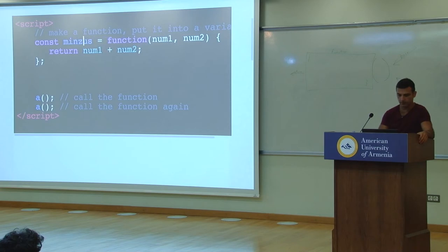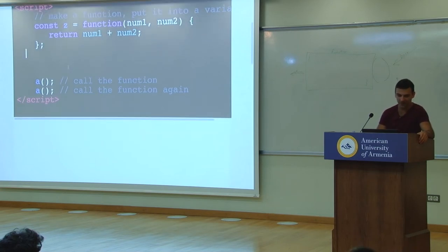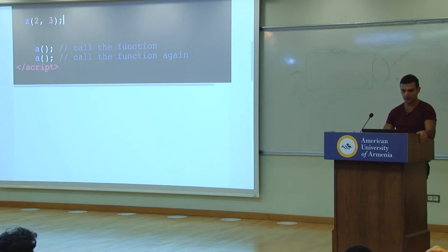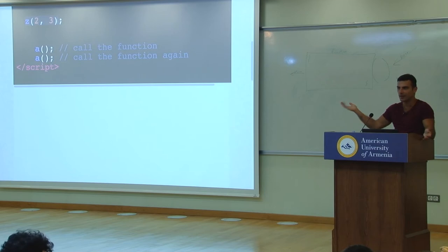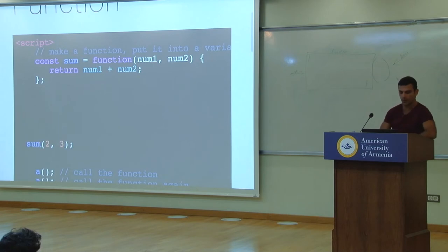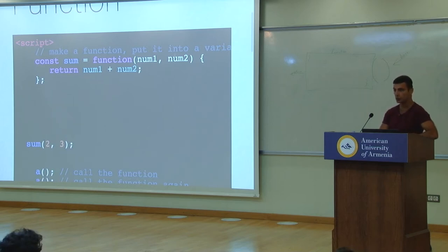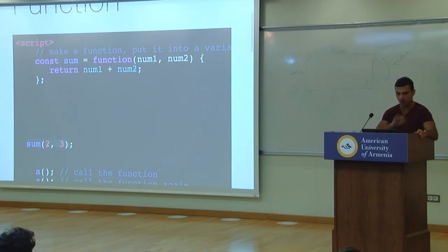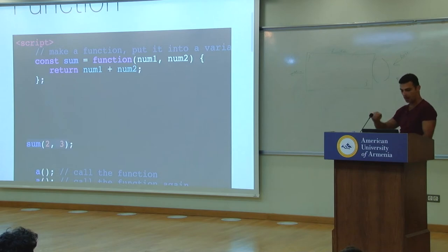If we call it correctly — if we call it sum — and then execute the function, we run the box by passing through the hole a 2 and a 3. 2 being num1, 3 being num2. Then on the other side, num1 plus num2 is 2 plus 3, which is 5. So the result of this would be 5. This runs and returns 5.